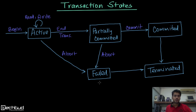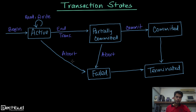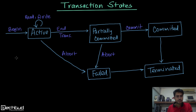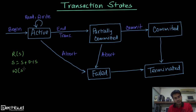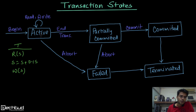Welcome to tector.com. In this lecture we will be understanding transaction states. Once a transaction starts, it goes through multiple states. Consider a transaction that updates a salary by 10%: the operations are read S, then S = S + 0.1*S, then write S. So this whole transaction has three operations.